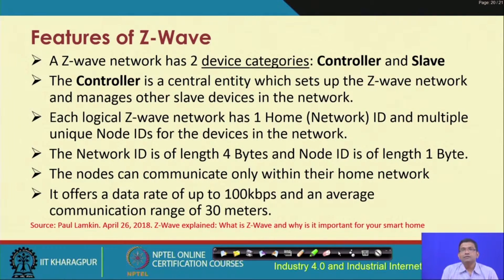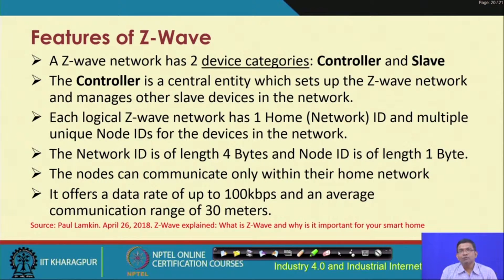There is a controller node and there are slave nodes. The controller is the central entity which sets up the Z-Wave network and manages the other slave devices. Each logical Z-Wave network has one home ID (the network ID, 4 bytes long) and multiple unique node IDs (each 1 byte) for the slave devices. Nodes can communicate only within their home network, with a range of up to about 30 meters.